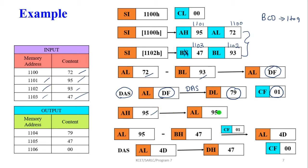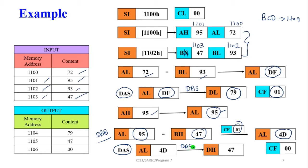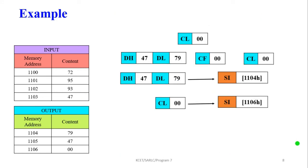Now perform subtraction between AL (95) and BH (47) along with the previous borrow — the carry flag is 1 — so we use the SBB instruction. The result stored in AL is 4D, which is not a BCD number. We use the DAS command to adjust: the result becomes 47, and the carry flag becomes 0. Now check the carry flag: it is 0, so the CL value is not incremented.